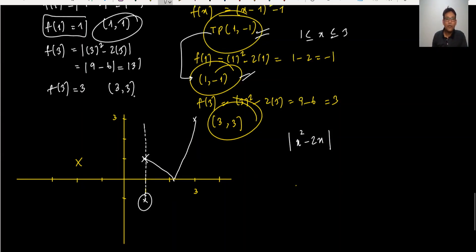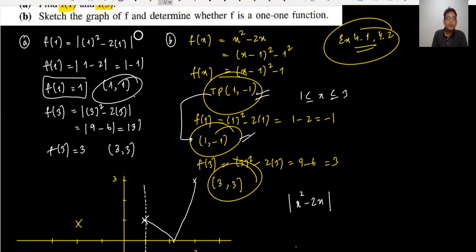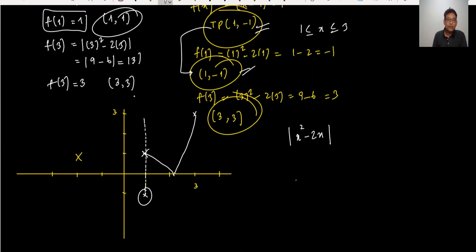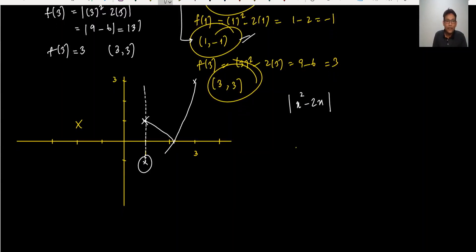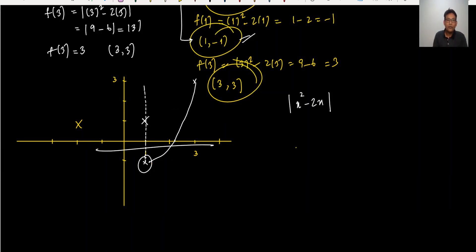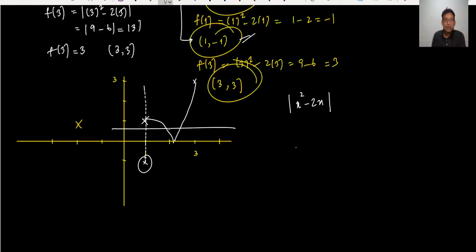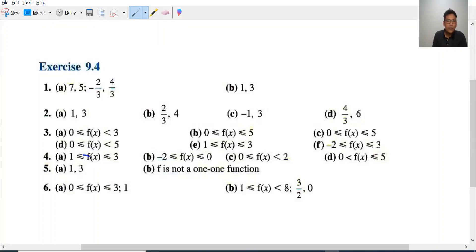They asked us to determine whether f is a one-to-one function. A function is one-to-one if every horizontal line cuts the curve at only one point. But when the curve has a U-shape and a horizontal line cuts it at two points, it is not a one-to-one function. As we have drawn the curve, we can see a horizontal line would cut two points, so f is not a one-to-one function — which matches the answer for question number 5.